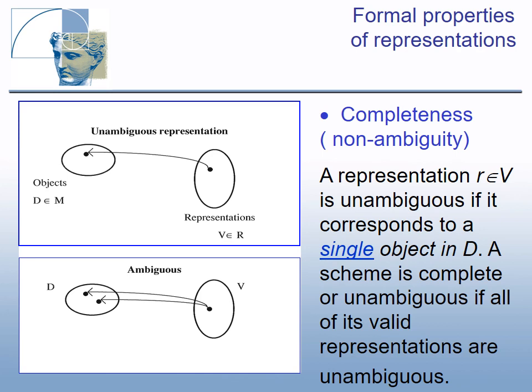Completeness, or non-ambiguity: does a valid representation correspond to only one object in the domain? A representation R belonging to V is unambiguous if it corresponds to a single object in D. It is ambiguous if it corresponds to two or more objects in D. A scheme is complete or unambiguous if all of its valid representations are unambiguous. Non-ambiguity is crucial for the automatic computation of properties of the represented objects.